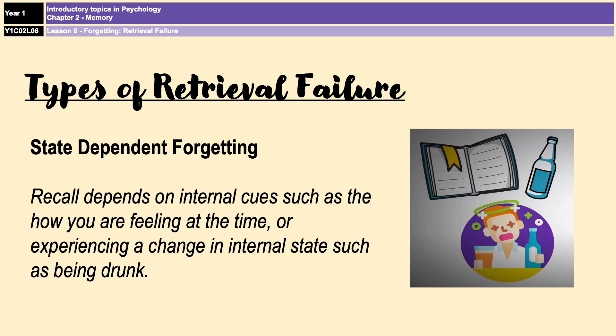State-dependent forgetting, on the other hand, is when recall depends on internal cues, such as emotions or a change in internal state like being drunk. For example, if you make a memory when you're sad, angry, or under the influence of alcohol, then you're more likely to remember that memory when you recreate those conditions and are again sad, angry, or drunk.